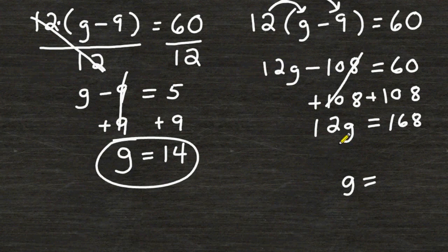At this point we have the equation 12 times some number g is equal to 168. So to isolate the letter g even further we have to do the opposite of multiplying g by 12 which is to divide by 12.